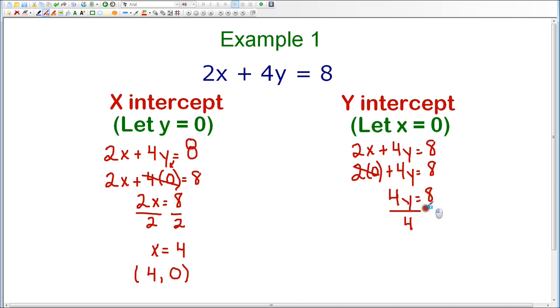If I divide by 4 on both sides, I can solve for y and y is equal to 8 divided by 4, which is 2. So I know that the y-intercept is 0, 2. That's the point on the y-axis.